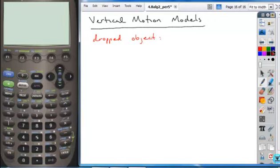In a dropped object, we identified as having the function h(t) equals negative 16t squared plus h(0).